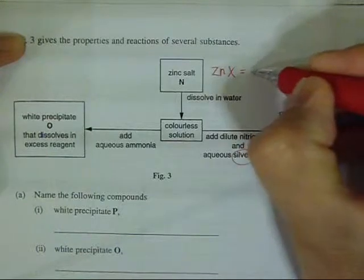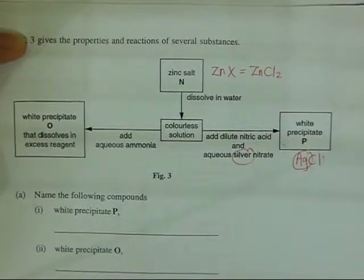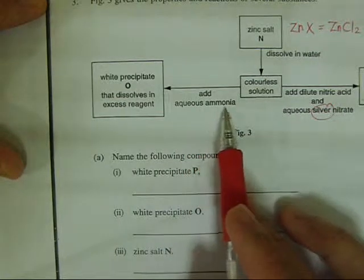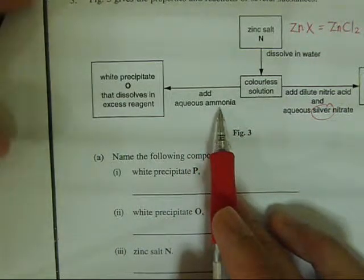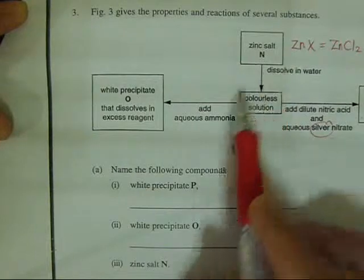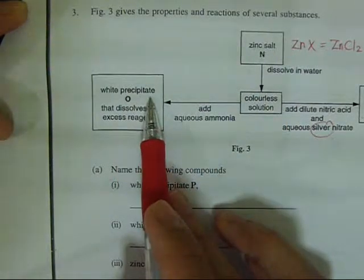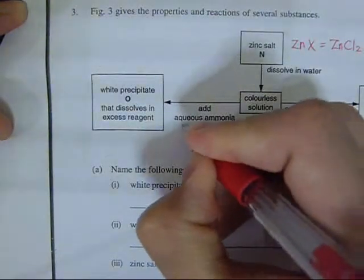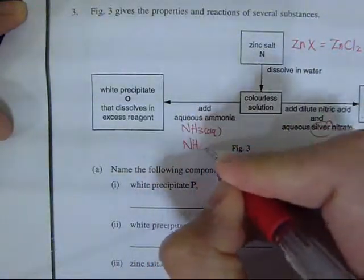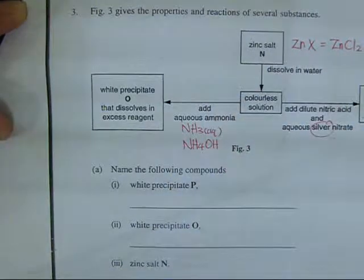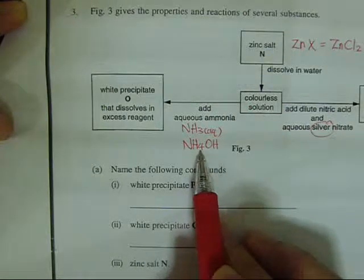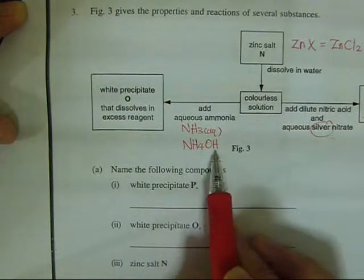After that, aqueous ammonia is added to the colorless zinc chloride solution. Aqueous ammonia is a reagent used to test for the cation — in this case we already know the cation is zinc. A white precipitate is obtained. Note that aqueous ammonia is the same as ammonium hydroxide; they are different names for the same substance.